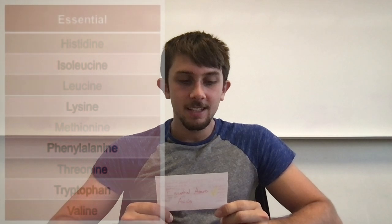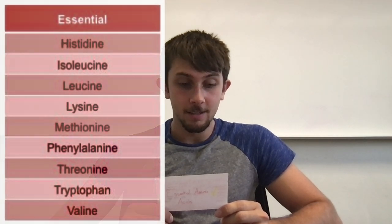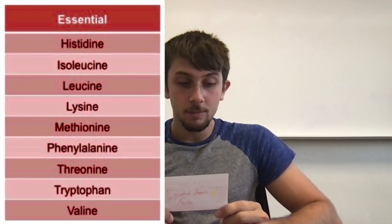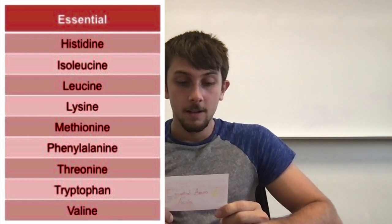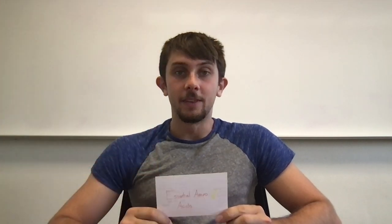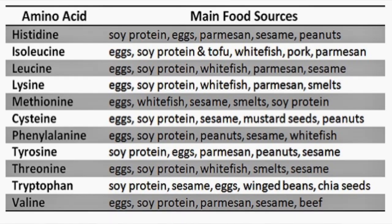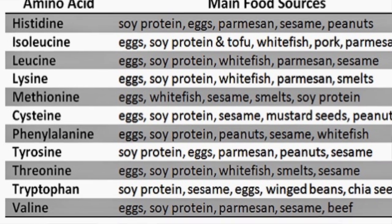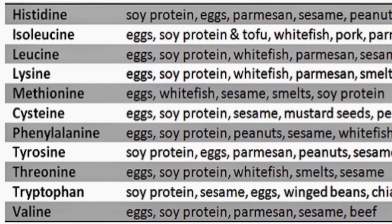Phenylalanine, histidine, isoleucine, leucine, lysine, tryptophan, threonine, valine, and methionine. These are the nine essential amino acids, and your body does not make any of them. So you need to obtain them from your diet, from your food selections, any way that you can.